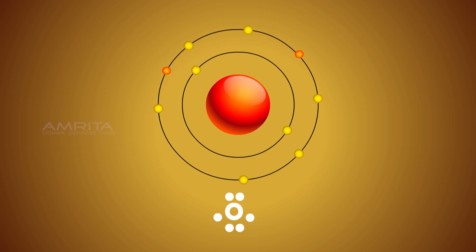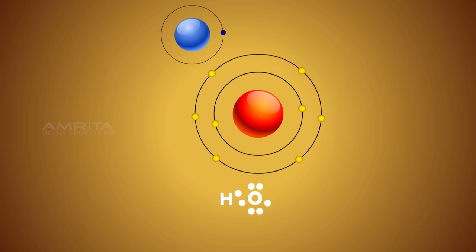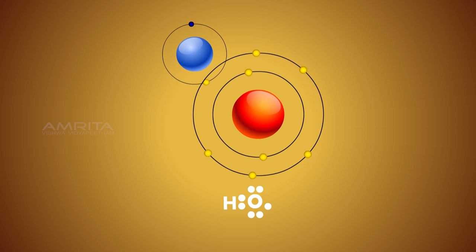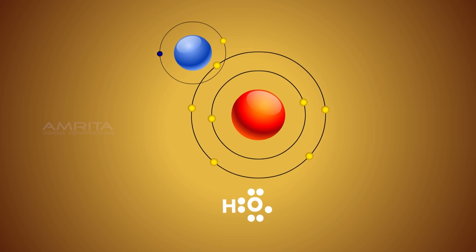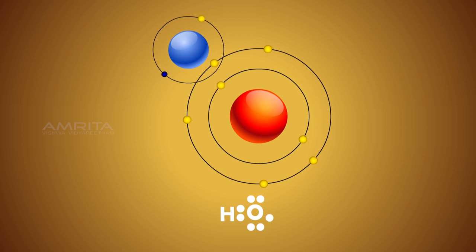As one hydrogen atom and one oxygen atom collide, a covalent bond is formed by the sharing of electrons between atoms. By sharing an electron pair with the oxygen atom, the hydrogen atom completes its first shell and attains a stable noble gas configuration.